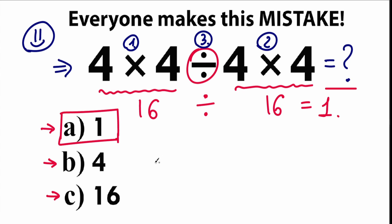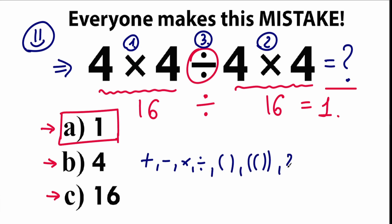What does order of operations mean? Everyone knows about mathematical operators like addition, subtraction, multiplication, division, sometimes parentheses, sometimes powers like 2 to the power 5, and a lot of these things. We need to know the correct order to perform them. We can't do it randomly — we can't say addition first, subtraction second, multiplication third, division fourth. We need to know the correct order to perform these mathematical operators.